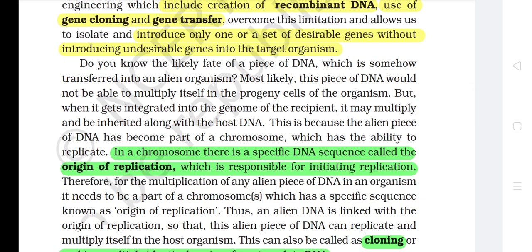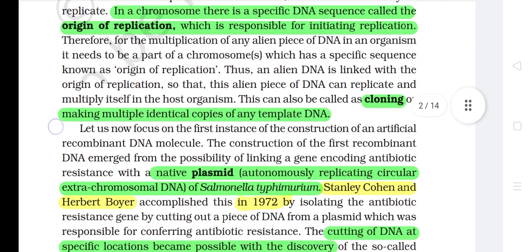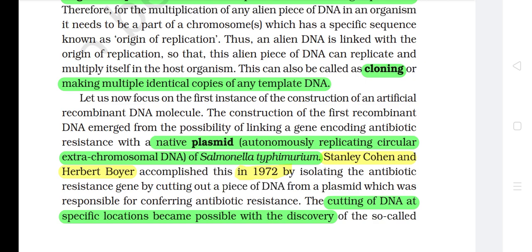What is the likely fate of a piece of DNA which is somehow transferred into an alien organism? Most likely this piece of DNA would not be able to multiply itself in the progeny cells of the organism. But when it gets integrated into the genome of the recipient, it may multiply and be inherited along with the host DNA, because the alien piece of DNA has become part of a chromosome which has the ability to replicate. In a chromosome, there is a specific DNA sequence called the origin of replication, which is responsible for initiating replication. Therefore, for the multiplication of any alien piece of DNA in an organism, it needs to be a part of a chromosome which has a specific sequence known as the origin of replication. Thus, an alien DNA is linked with the origin of replication so that this alien piece of DNA can replicate and multiply itself in the host organism.